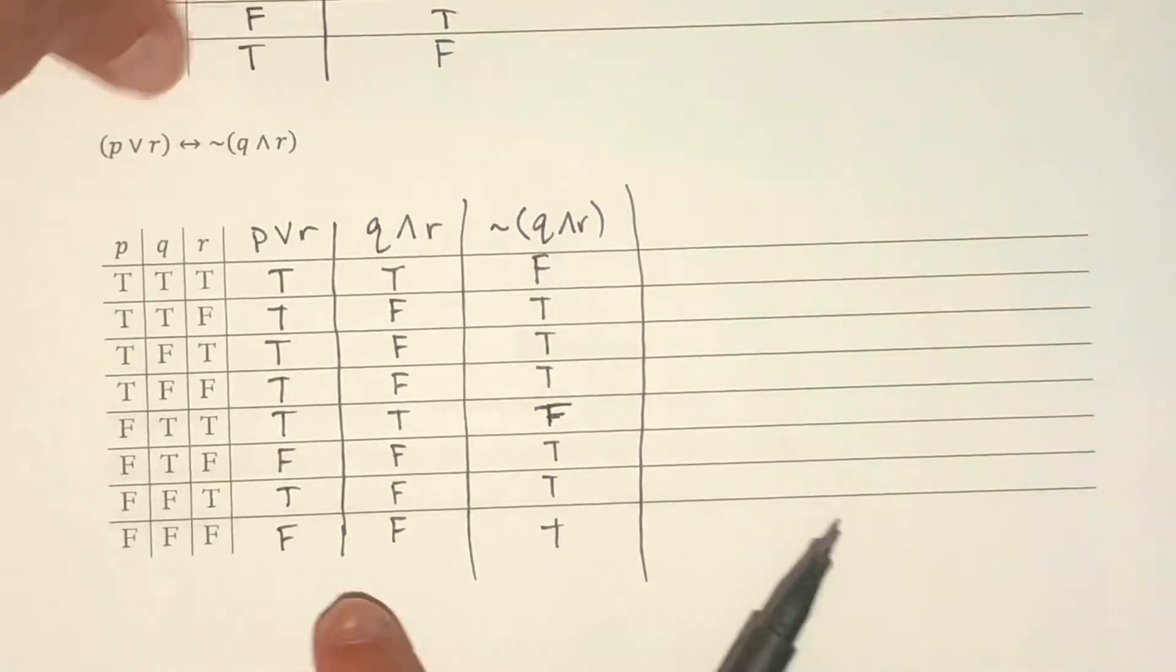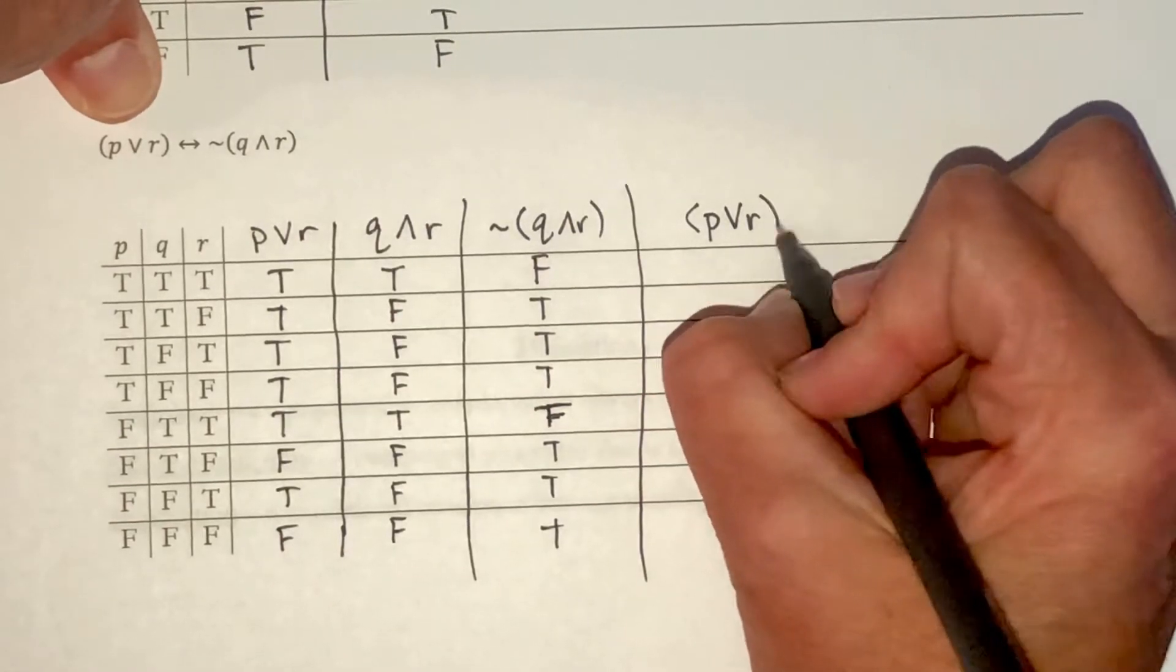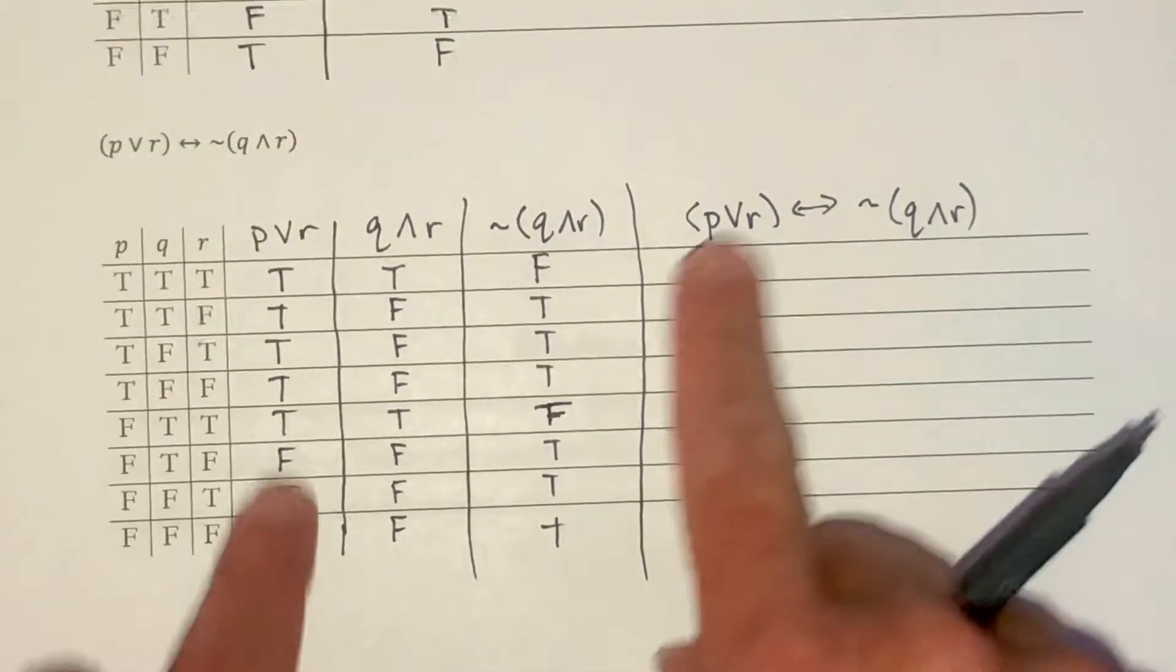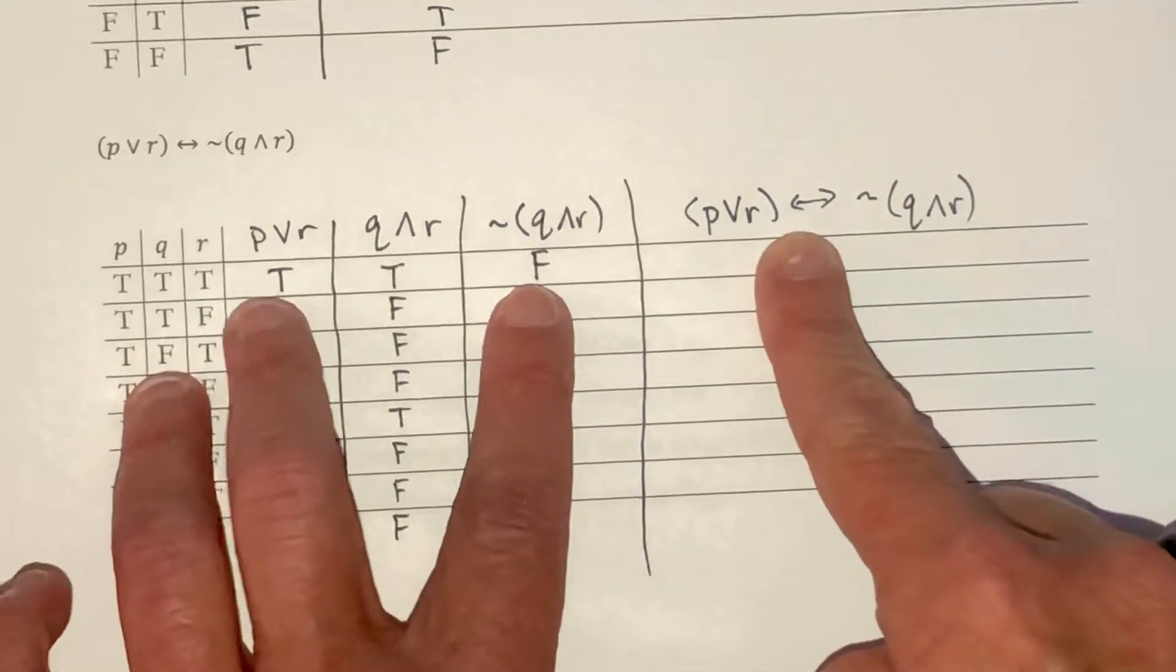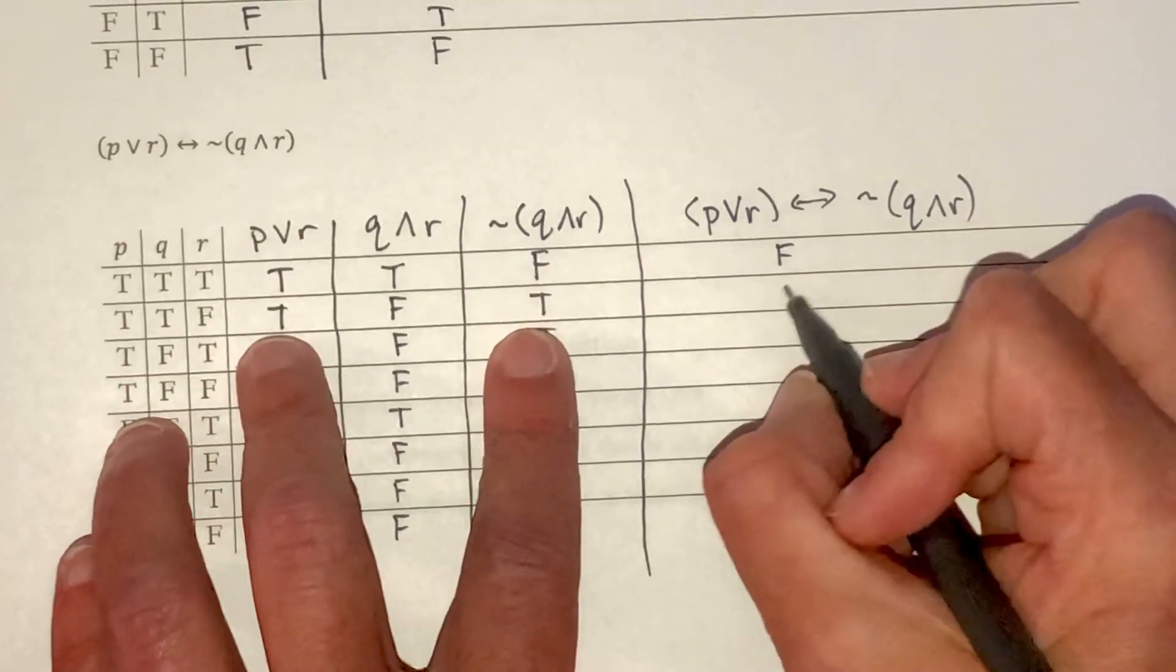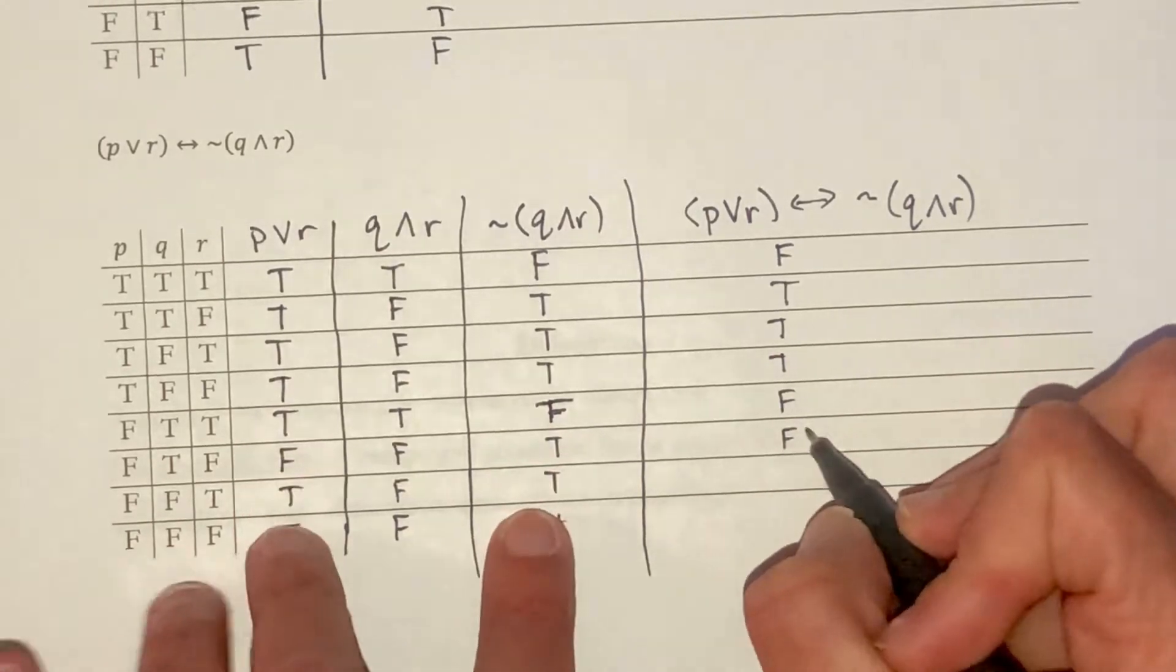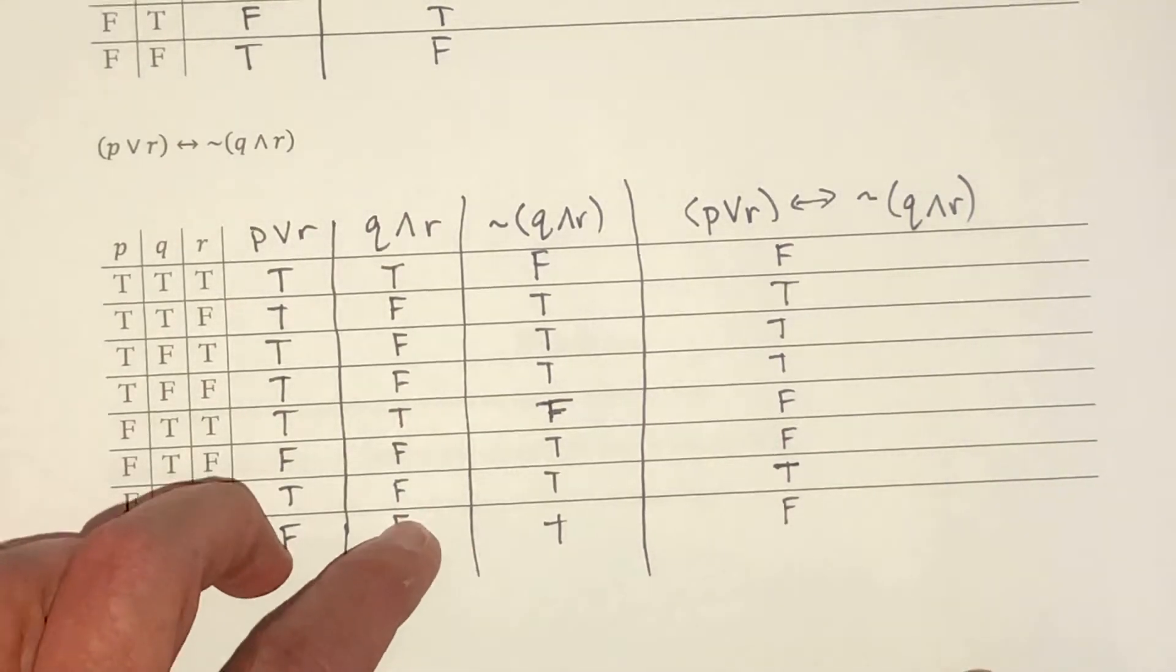Okay, so now finally we have each piece. We are ready to do the biconditional. So I'm ready for P or R biconditional not Q and R. So it's a biconditional using this statement and this one. And remember, with a biconditional, they need to have the same truth value. So since I have a true and a false here, this is false. They're the same here. So true, true, true. They're different. So false, false. That one's true. And that one is false.